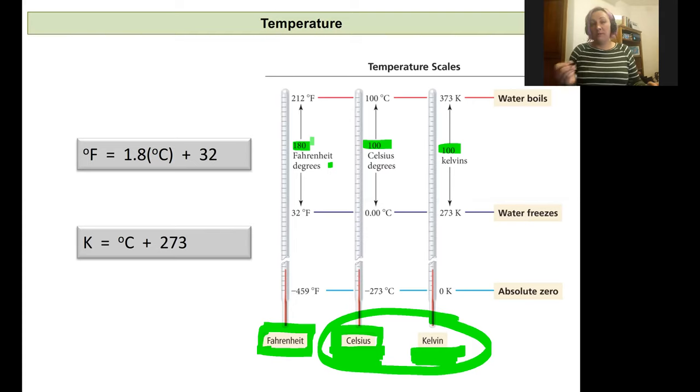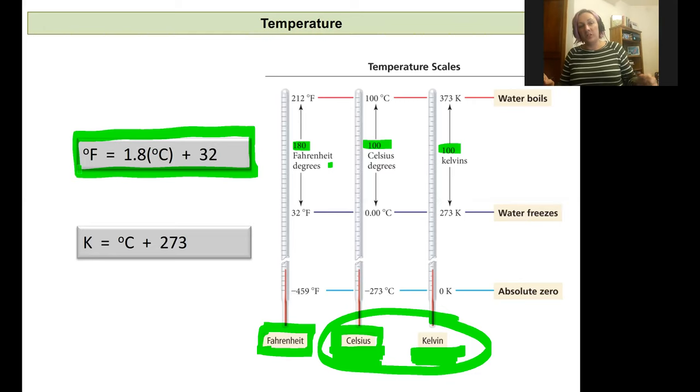That's why to convert between Fahrenheit and Celsius, we have kind of a cumbersome equation to do that, which is listed here, that any degree Fahrenheit would be equal to 1.8 times the equivalent degree in Celsius plus 32. The scales begin at different points for zero, and each degree of change is very different.